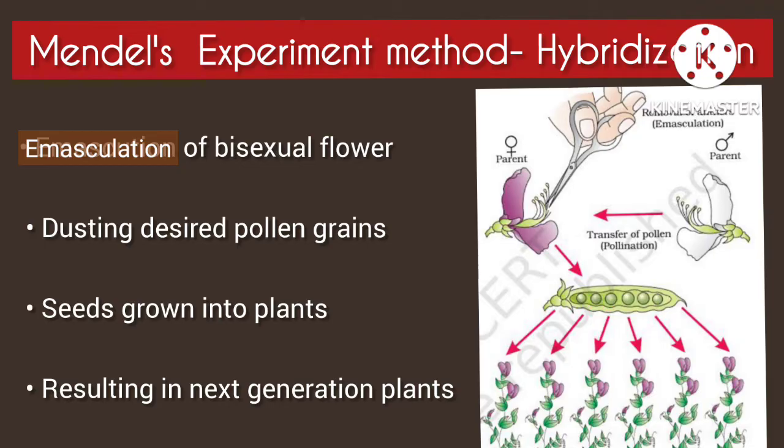Mendel's experiment method is Hybridization. We have seven contrasting characters in the garden pea plant used for experiments. In artificial hybridization, we have emasculation.